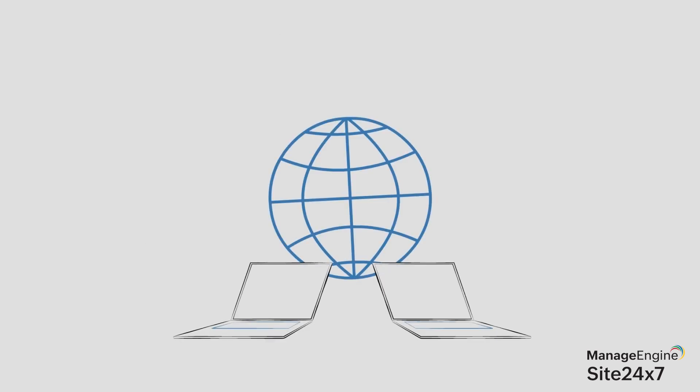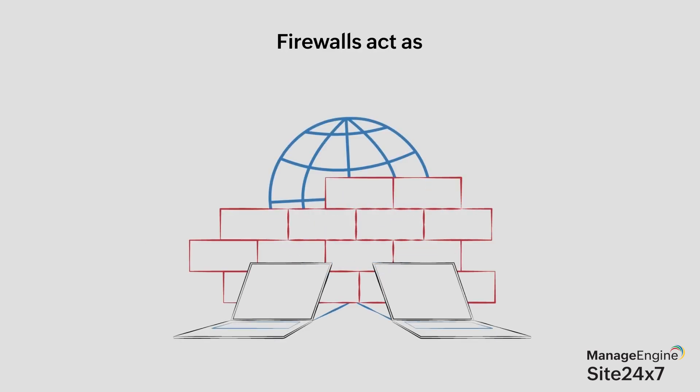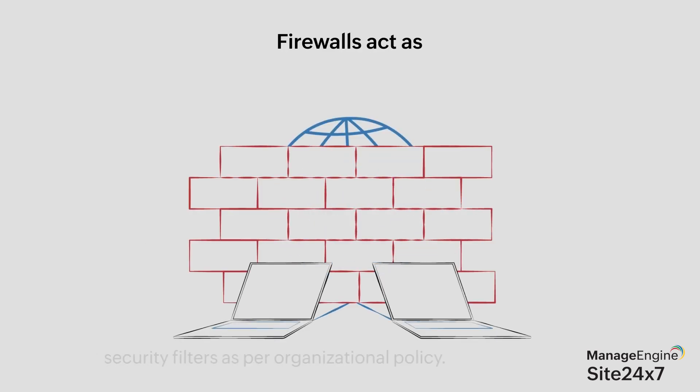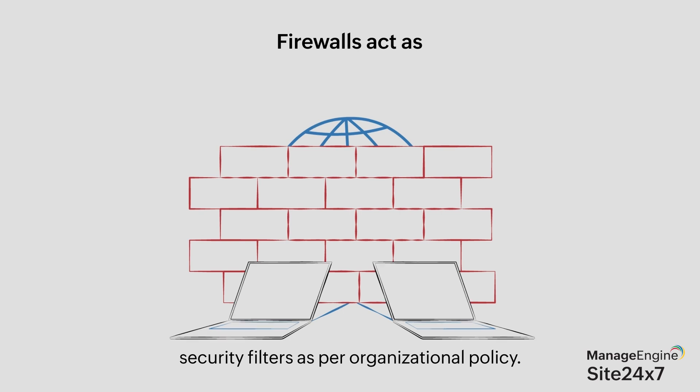The next device we will look at in this video is a firewall. Firewalls act as the security barrier between the private network and the public internet and ensure that data that reaches a network is filtered according to the organizational security policy.